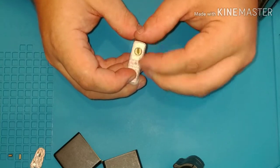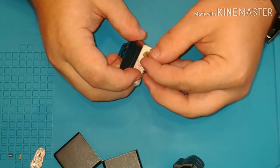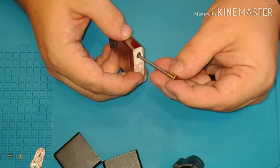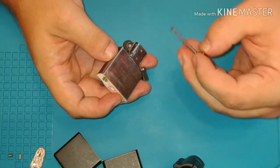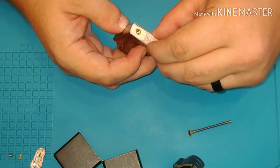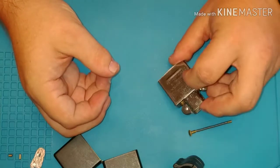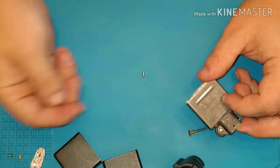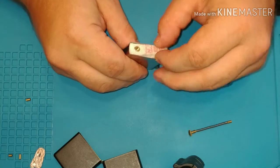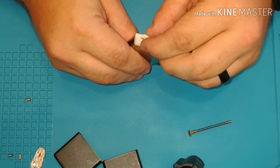You unscrew this and you've got to be careful because that spring will pop out - that's what pushes your flint up to the wheel. Let's set this off to the side and go ahead and dump out this flint.